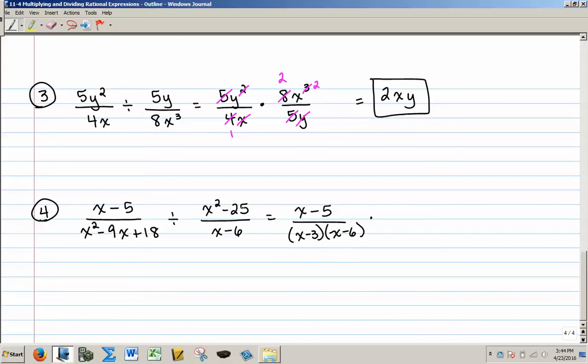And now flipping this, I'll have an x minus 6 on the top, and my x squared minus 25 is the difference of squares, so that I'll factor into an x plus 5 and an x minus 5.